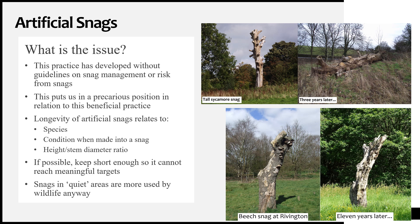The longevity of artificial snags is relatively easy to determine if you keep track of a few dozen of them, as I have done. The images on the slide show a snag created out of a mature sycamore and one from a mature beech tree. The former lasted only nine years before it fell and had been cut to a height of 11.7 metres. The latter snag is less than three metres tall and has been a standing snag for over 15 years. Species, structural condition at the time of making the tree into a snag, and the height-to-stem-diameter ratio are key factors in longevity of an artificial snag.